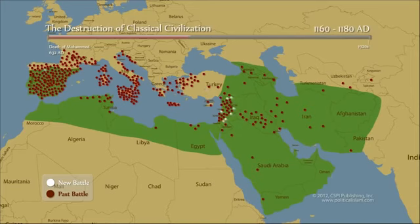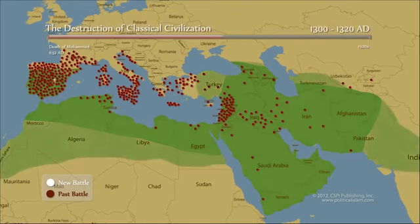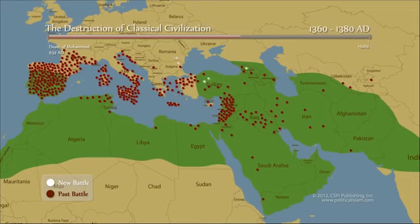You will notice that it is relentless — it is ceaseless, it goes on and on. Why is this? Because all of this was an imitation of Muhammad, the supreme warrior. He averaged a battle event every six weeks for the last nine years of his life. He was relentless, and the jihad was relentless.